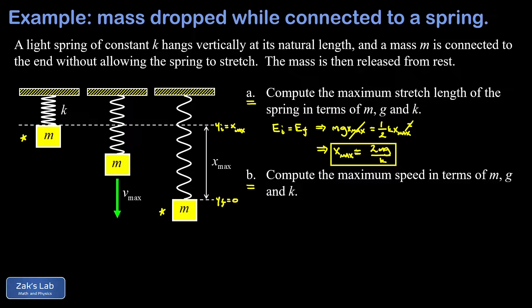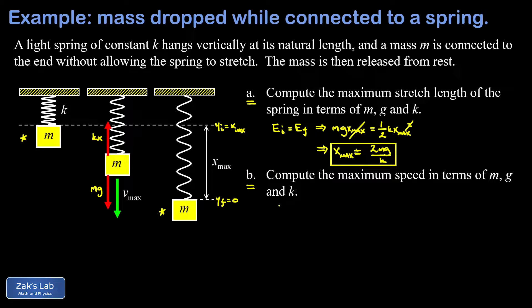The second part — finding maximum speed in terms of M, G, and K — is more challenging. We need to reason about competing forces to determine the stretch length where maximum speed occurs. As the mass moves down, gravity pulls down with magnitude MG while the spring pulls up with magnitude KX (Hooke's law). Initially KX is small so MG wins, giving a net downward force and downward acceleration. Eventually the spring force exceeds gravity, and the mass slows down. The maximum speed occurs at the moment KX equals MG — when the mass stops accelerating downward.